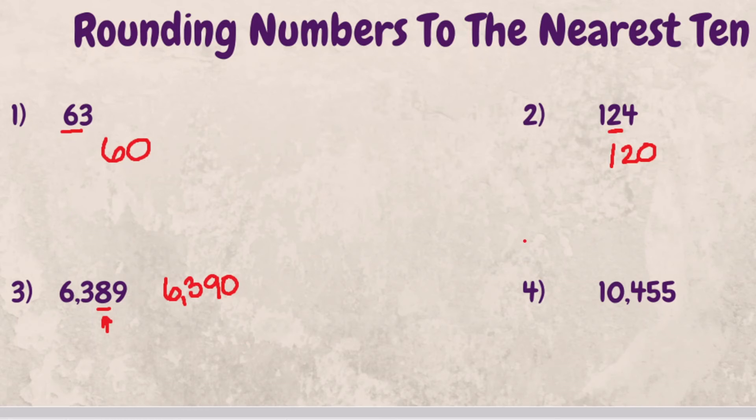Last example, 10,455. This 5 is in our 10 spot. This 5 is in our 1 spot. 5 or greater means you round this digit up. 10,460.